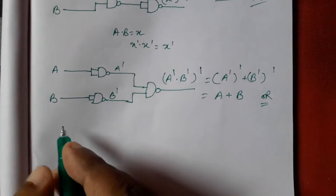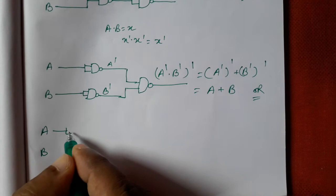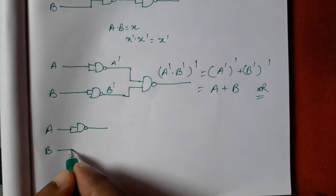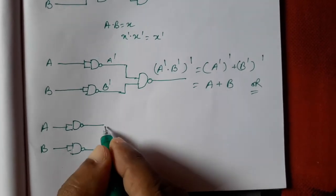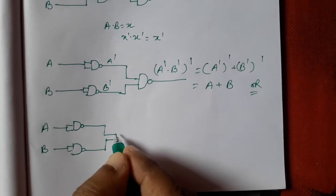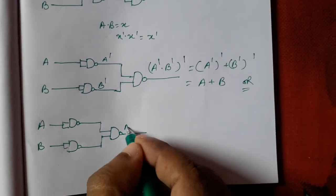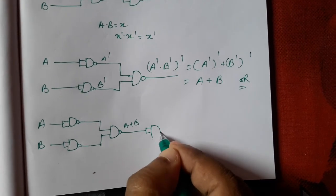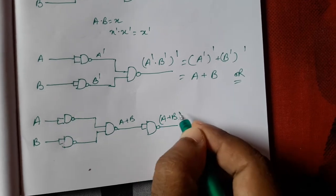Now we need NOR gate, simple. Same thing we will do. A and B. With A we will take one NAND gate. With B also we will take one NAND gate. We will use another NAND gate. That is our A plus B. And here again we will add our NAND gate. That will be A plus B whole complement. That is our NOR gate.